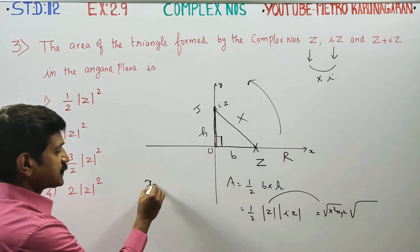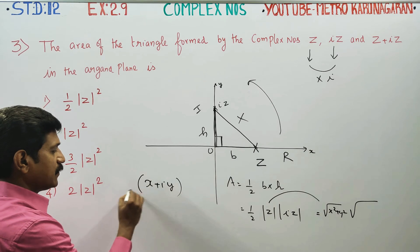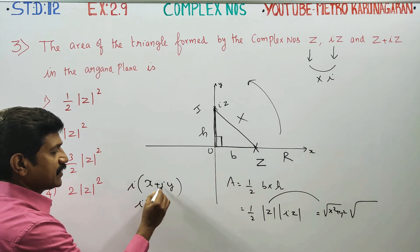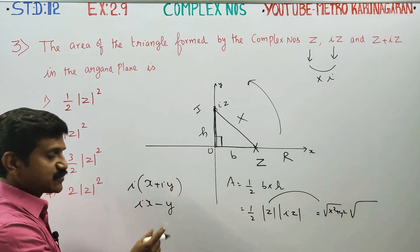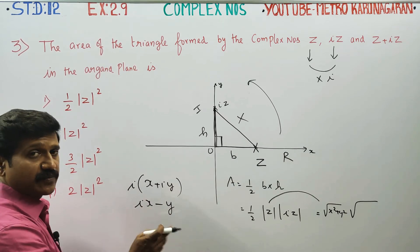I multiply it. x plus iy. I multiply it. If ix, i square is equal to minus 1, y is equal to y. Then x square root of x square plus y square, square root of x square plus y square.